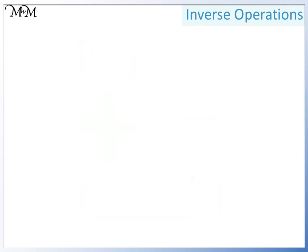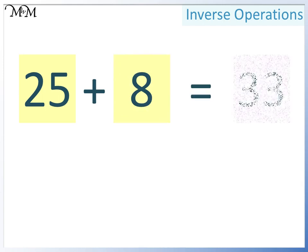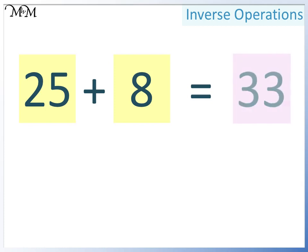Here's an example. 25 plus 8 equals 33. Two smaller numbers add together to make a larger number. The inverse of addition is subtraction, so we'll now write this as a subtraction.